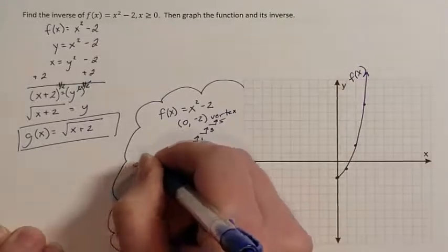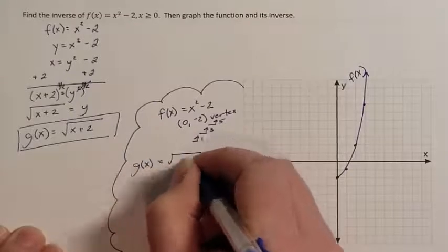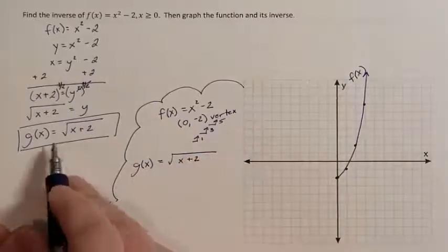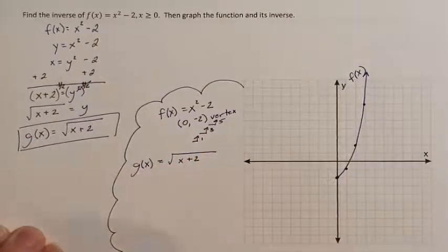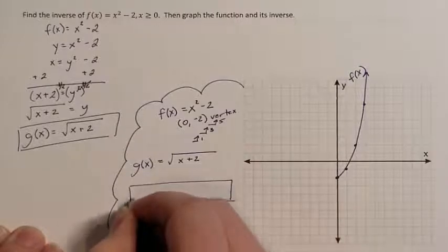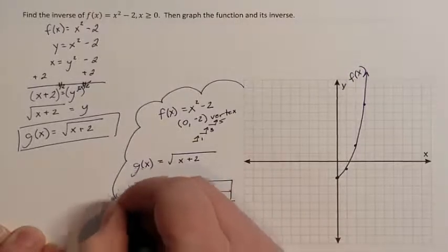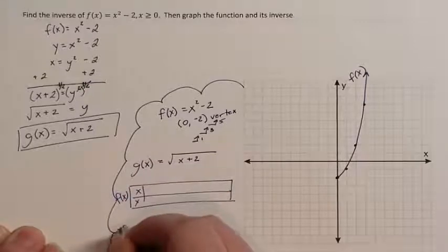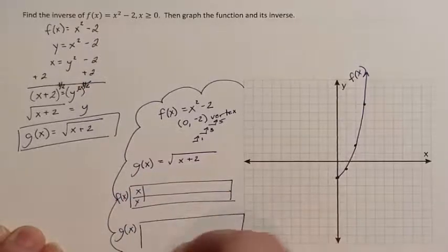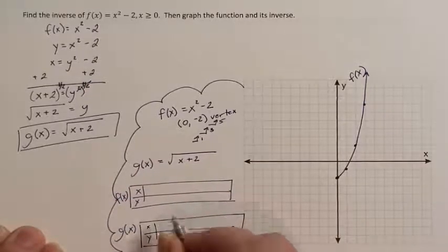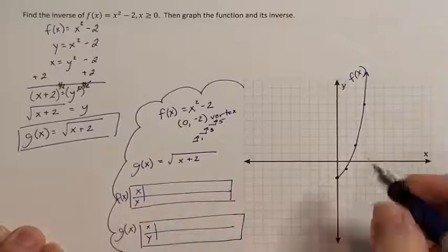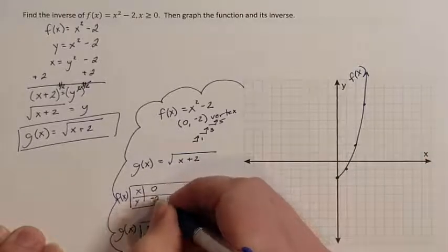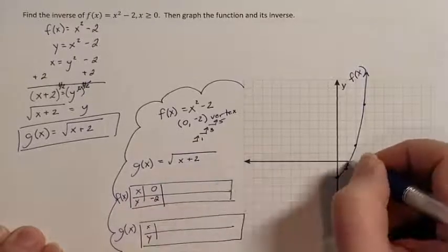Well now I need to graph my g of x function. And I don't necessarily know how to graph the g of x function. So let's go ahead and use our f of x table to come up with our g of x table that will allow us to graph it. So what points did we graph on our f of x? This was 0, negative 2.